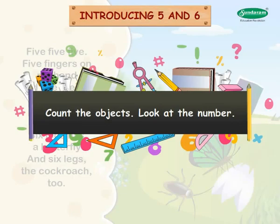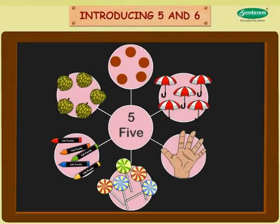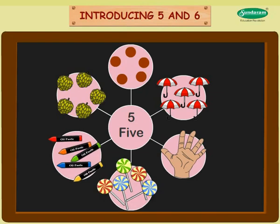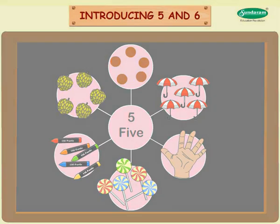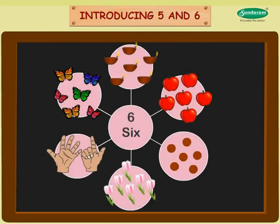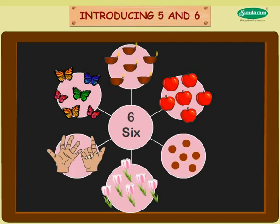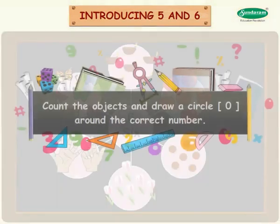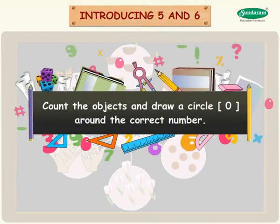Count the objects. Look at the number. Five dots. Five umbrellas. Five fingers. Five lollipops. Five crayons. Five custard apples. Six lamps. Six apples. Six dots. Six roses. Six fingers. Six butterflies. Count the objects and draw a circle O around the correct number.